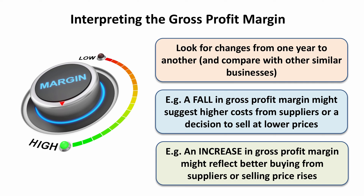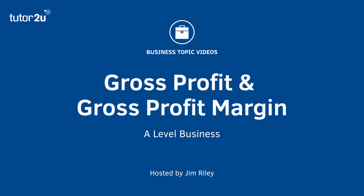If we see an increase in the gross profit margin, it can often be the reverse. It could be that we've been buying better from our suppliers — perhaps we've been able to negotiate a cost reduction on the cost of goods we buy from them. Or perhaps we've been able to achieve an increase in selling prices with our customers without necessarily suffering an increase in costs. That's a brief introduction to how we calculate gross profit and the associated ratio of the gross profit margin.